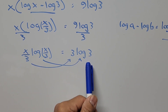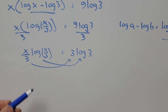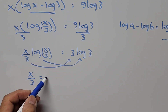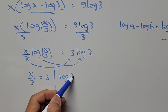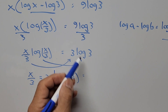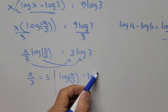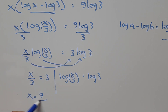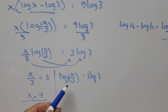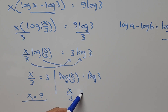By direct comparison: x divided by 3 can be equated to 3, and log of (x divided by 3) can be equated to log 3. So x divided by 3 equals 3, which gives x equals 9. We can cancel the log from both sides and we end up with x divided by 3 equals 3, confirming x equals 9 as our answer.